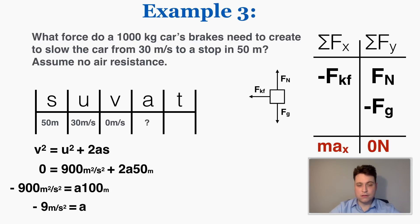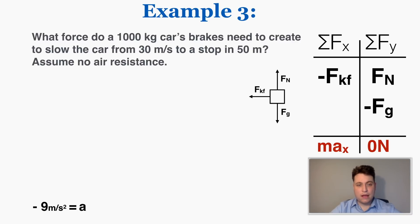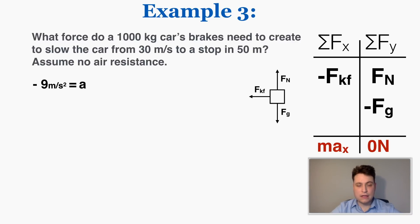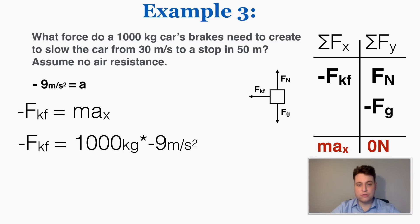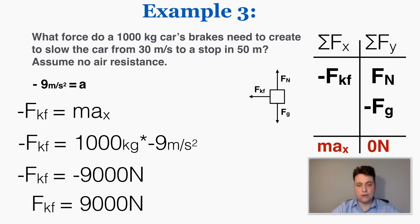If one direction is positive the other must be negative, so this is a negative acceleration. Now I can take this and plug it in to figure out the force of kinetic friction. I have the acceleration and the mass, and together those equal the force of kinetic friction because that's the only thing happening in the x direction.